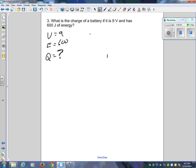V equals E over Q. We are looking for the charge, so Q equals E over V is our formula for charge. Q equals energy, 600, divided by 9. Your Q value is 66.7 coulombs.